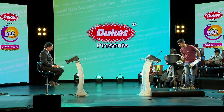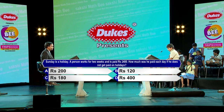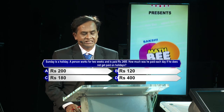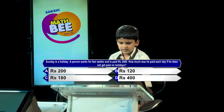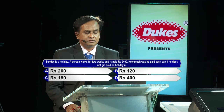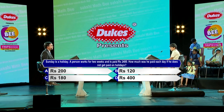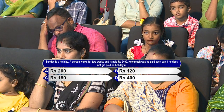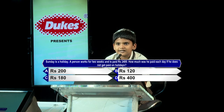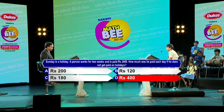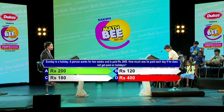Next I call upon Budheep Shankar from KKR Gautam School. Question please: Sunday is a holiday. A person works for two weeks and is paid rupees 2400. How much was he paid each day if he does not get paid on holidays? Options: A) Rs 200, B) Rs 120, C) Rs 180, D) Rs 400. Option D 400 — kindly lock option D Rs 400. I'm so sorry Budheep, option A Rs 200 is the correct answer.